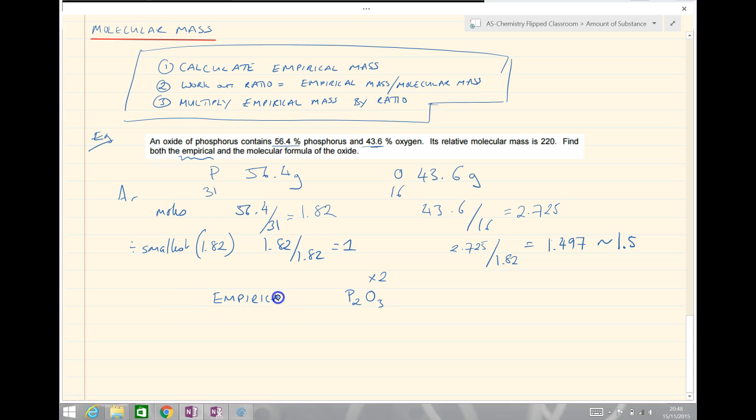Now what we're interested in is the molecular formula. We're going to come back up to our steps. The first thing to do is calculate the empirical mass. The empirical mass is going to be 2 times 31 for the phosphorus plus 3 times 16, and that is 110. Work out the ratio, so our ratio here is going to be equal to...